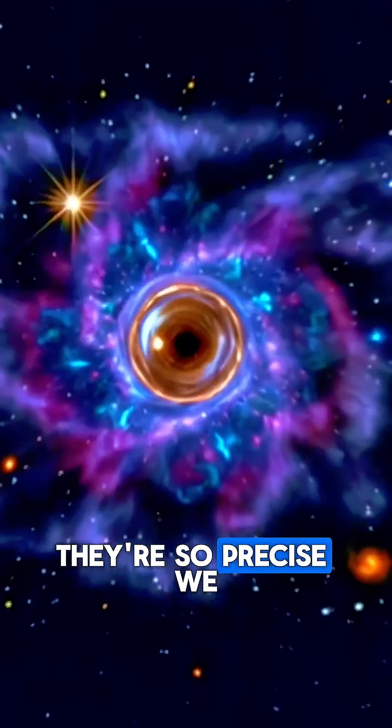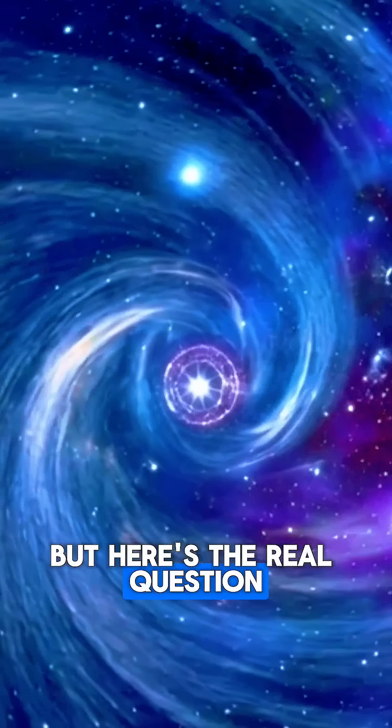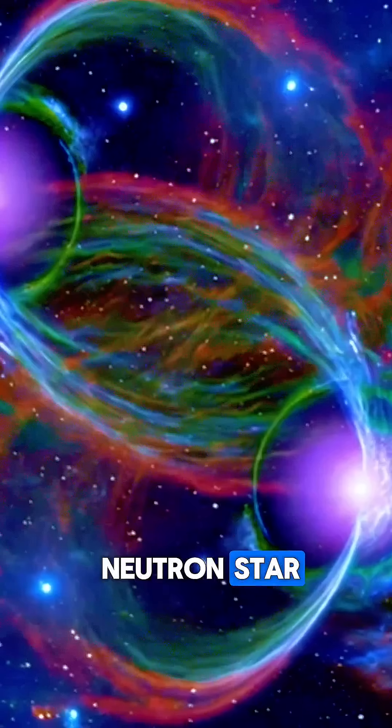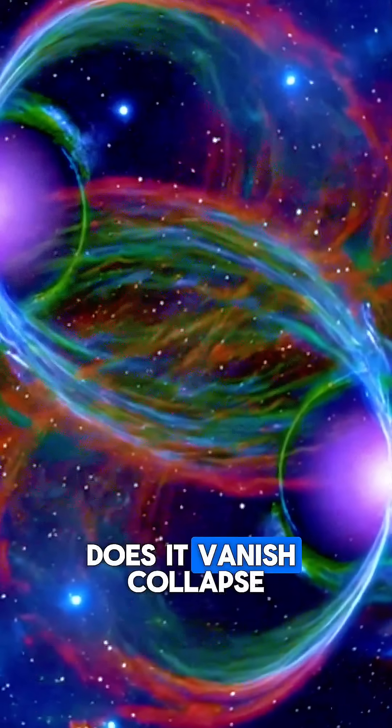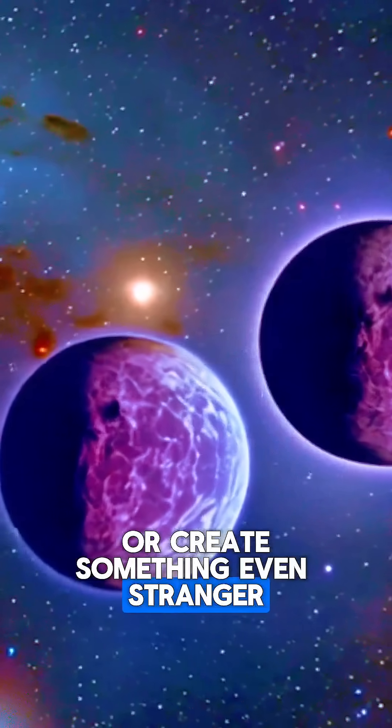They're so precise, we use them to measure time in deep space. But here's the real question. What happens when a neutron star meets another neutron star? Does it vanish? Collapse? Or create something even stranger?